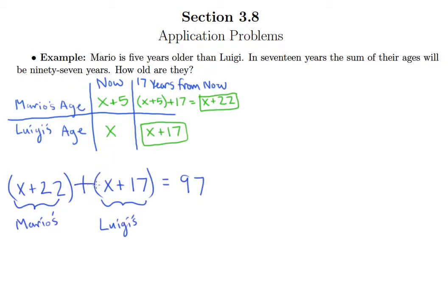And we know if there's simplifying to do, we do that first. So x plus x is 2x, and then 22 plus 17 is going to give me 39.